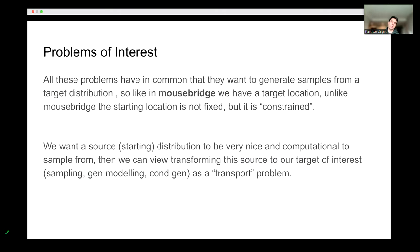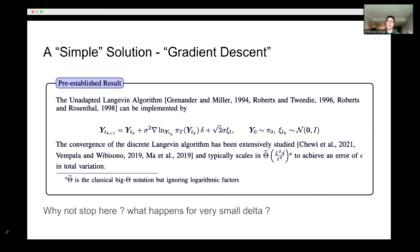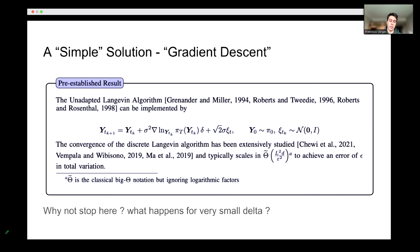All we care about is finding some coupling, some transport between source and target distributions that is easy to learn or nice to sample. Let's start by going over some existing methods. One is EULA, the Langevin algorithm: we follow gradients of the target distribution and add noise, which can be shown to converge to the target distribution. This is a simple algorithm computationally for sampling — we can evaluate gradients of the target distribution and simulate this. It has a semi-okay convergence rate.